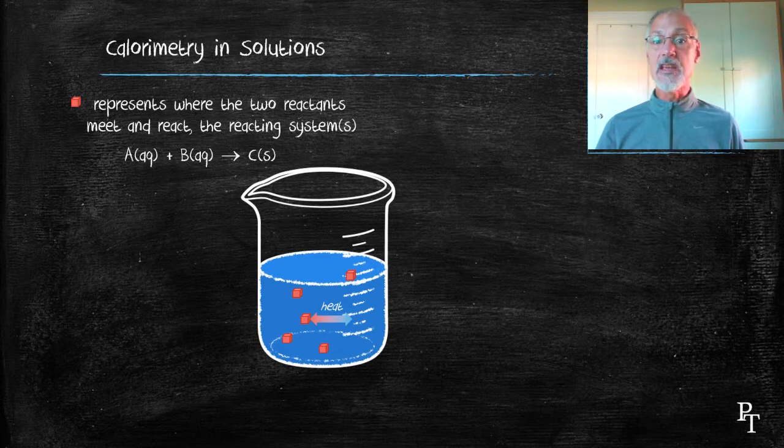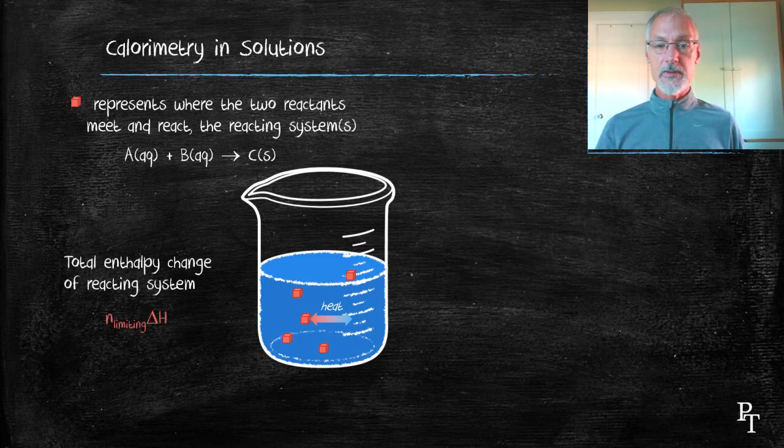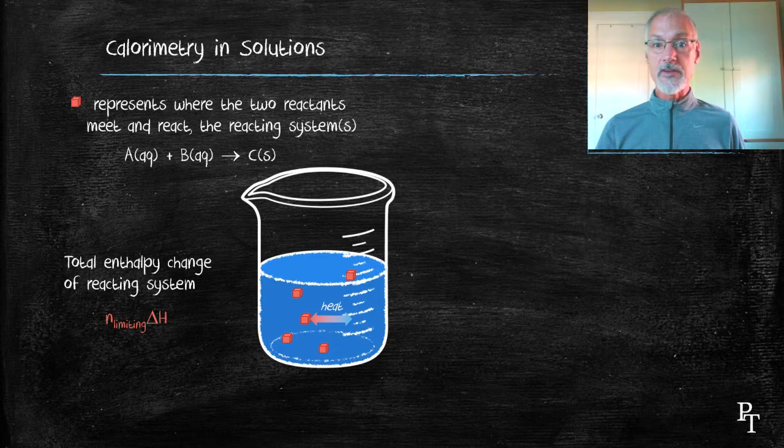In this case, A and B get together to make C at all of these locations throughout the solution. The total amount of heat then exchanged with the surroundings would be generated by the number of moles of our limiting chemical times the molar enthalpy change associated with either A or B.